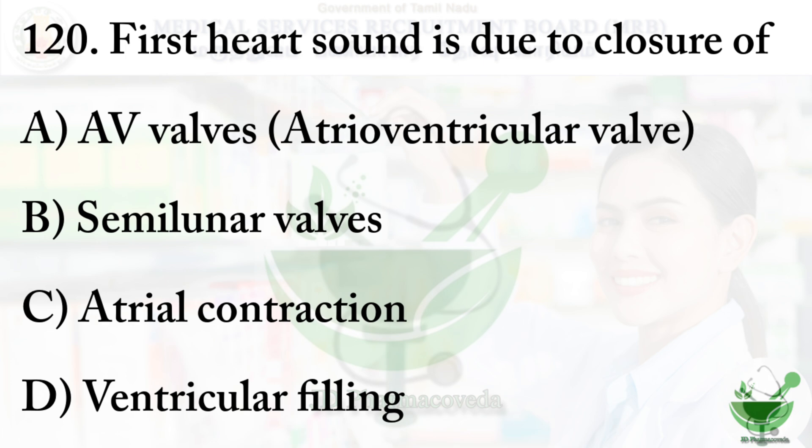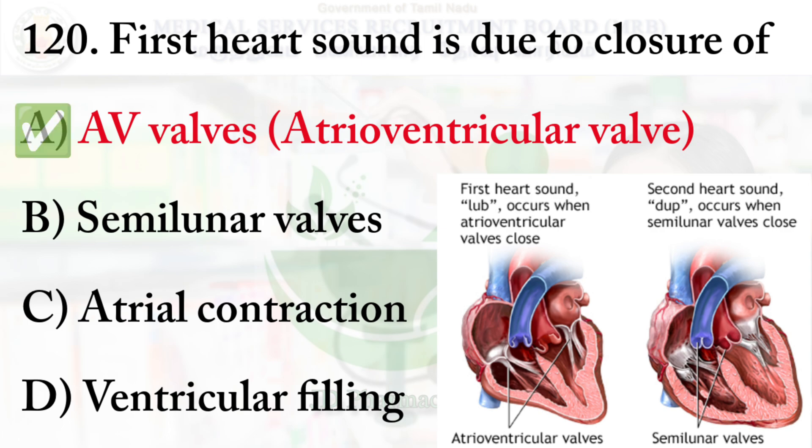Question 120: The first heart sound is due to closure of — Option A: AV valves (atrioventricular valve), option B: semilunar valves, option C: atrial contraction, option D: ventricular filling. The right option is option A, atrioventricular valve.